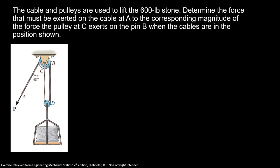The cable and pulleys are used to lift the 600 lb stone. Determine the force that must be exerted on the cable at A and the corresponding magnitude of the force the pulley at C exerts on the pin B when the cables are in the position shown.